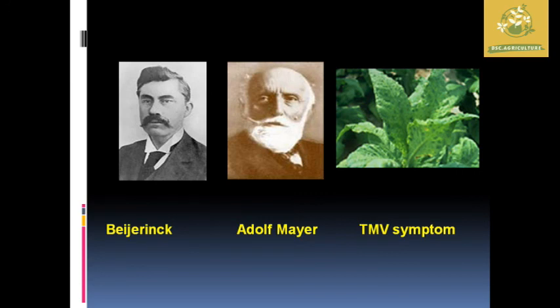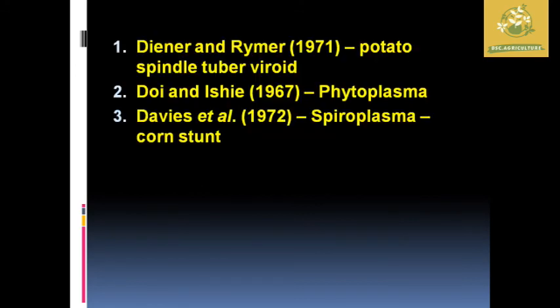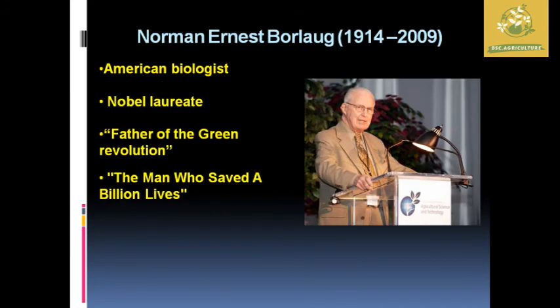Other important scientists include Diener and Raymer who gave potato spindle tuber viroid, Doi and Ishii for phytoplasma, Davis et al. for spiroplasma. Norman Borlaug, known as the father of the Green Revolution and one of the American biologists, saved billions of lives through his ideas on green revolution, producing food materials for millions of people, and was awarded the Nobel Prize for his work.